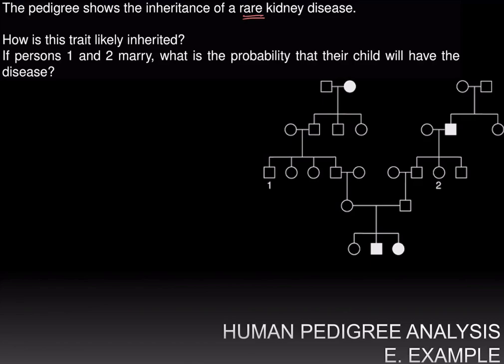So let's try and answer the first question: how is this trait likely inherited? We have to look at the hallmarks of different types of traits. In this case, we see that there are several individuals who are affected even though their parents are not affected, and that means this is most likely a recessive trait.